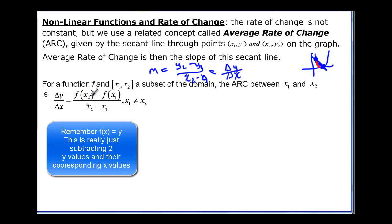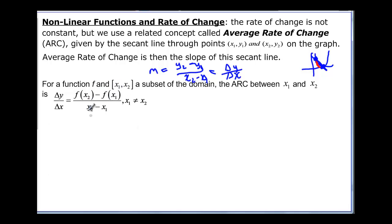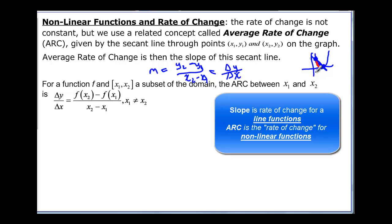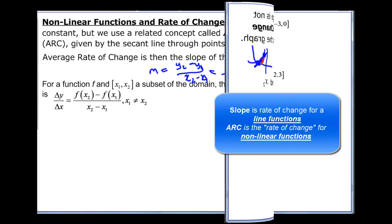So we take the y value for whatever our x2 point was and subtract it from the x1 y value, and then subtract the x's, as long as they're not equal, because if they're equal we were just at one point. So the average rate of change just uses function notation, but it's basically still going to be our slope. You just have to understand that it's not slope because it has a curve and not just a straight line between the two points.